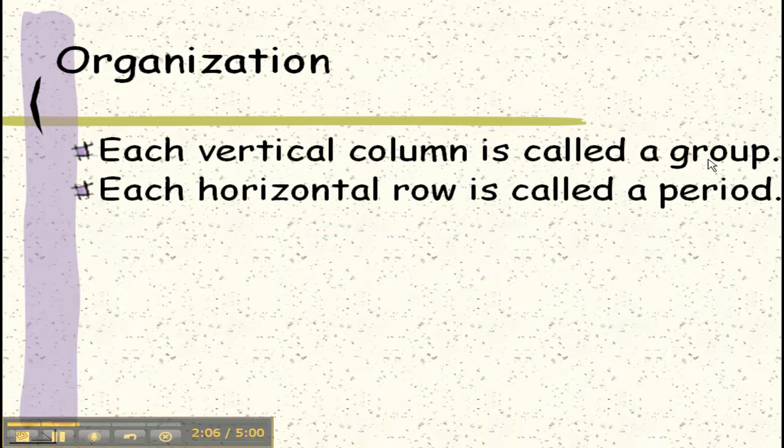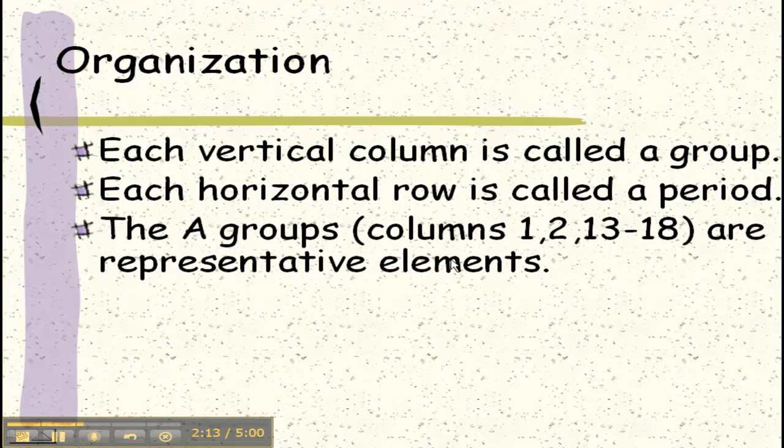Each vertical column is called a group. Columns go up and down. Each horizontal row, going left to right, is called a period. The A groups, which are columns 1, 2, and 13 to 18, are called representative elements.